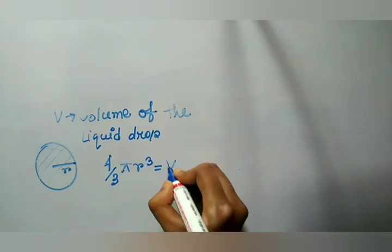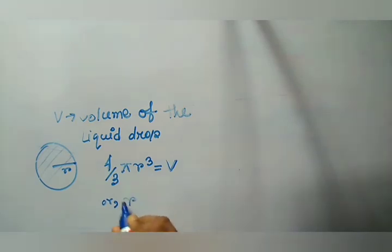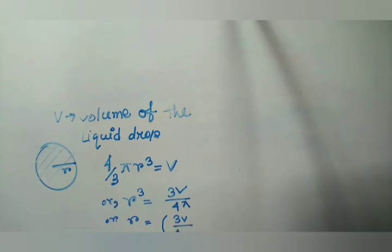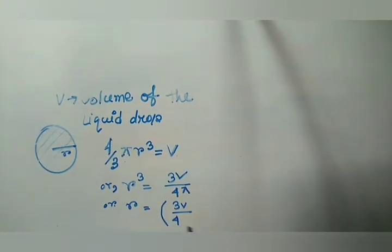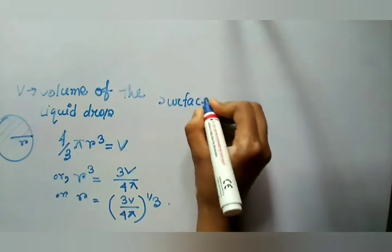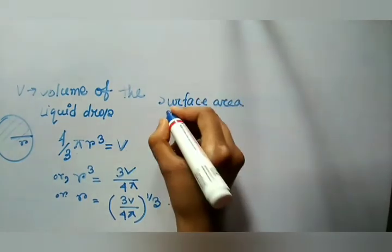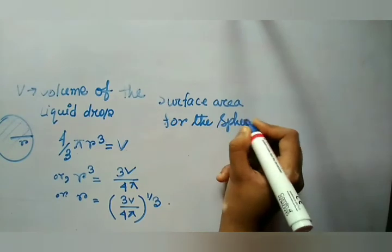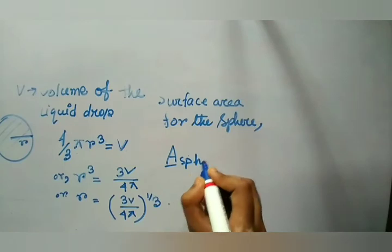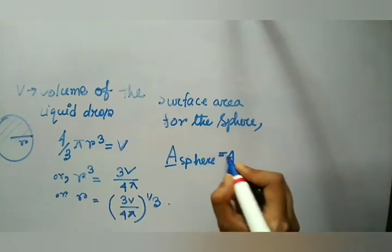From here we get r equals (3V / 4π)^(1/3). Now, the surface area of a sphere is 4πr². If we substitute the value of r, we get the surface area equals 4π times (3V / 4π)^(1/3) squared.